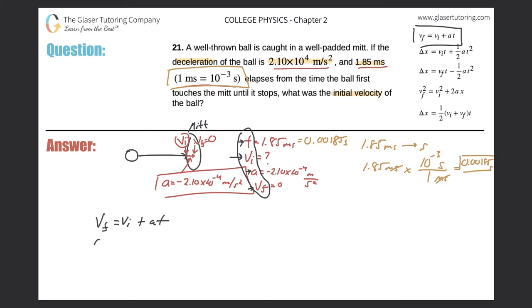Let's plug in the values. The final velocity is 0. The initial velocity is what we're looking for, so let's leave that VI. The acceleration was negative 2.10 times 10 to the minus 4. I'm leaving out the units now because I know they're all consistent. And the time was 0.00185. So this is 0 equals VI minus 3.89 times 10 to the minus 7.